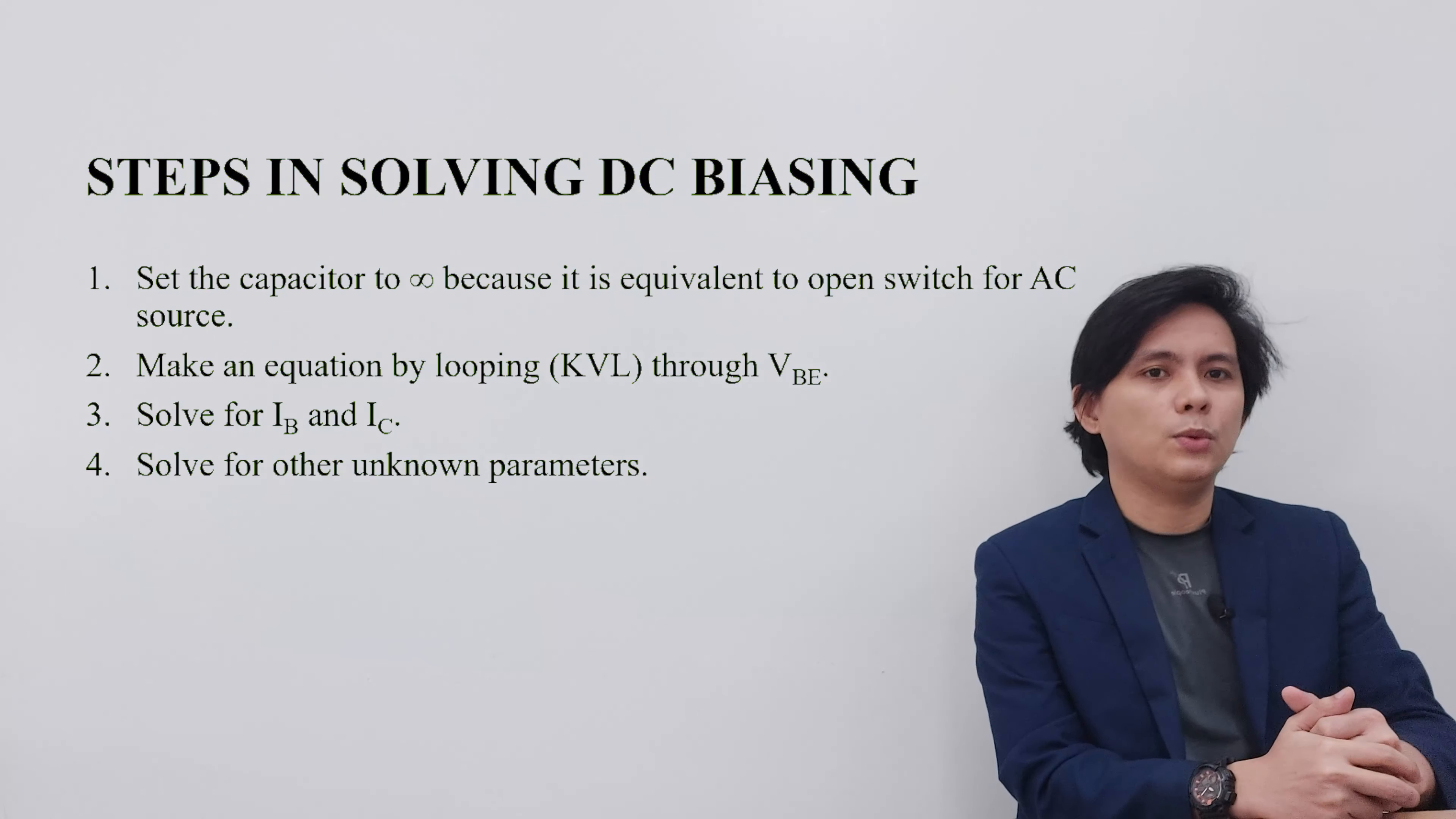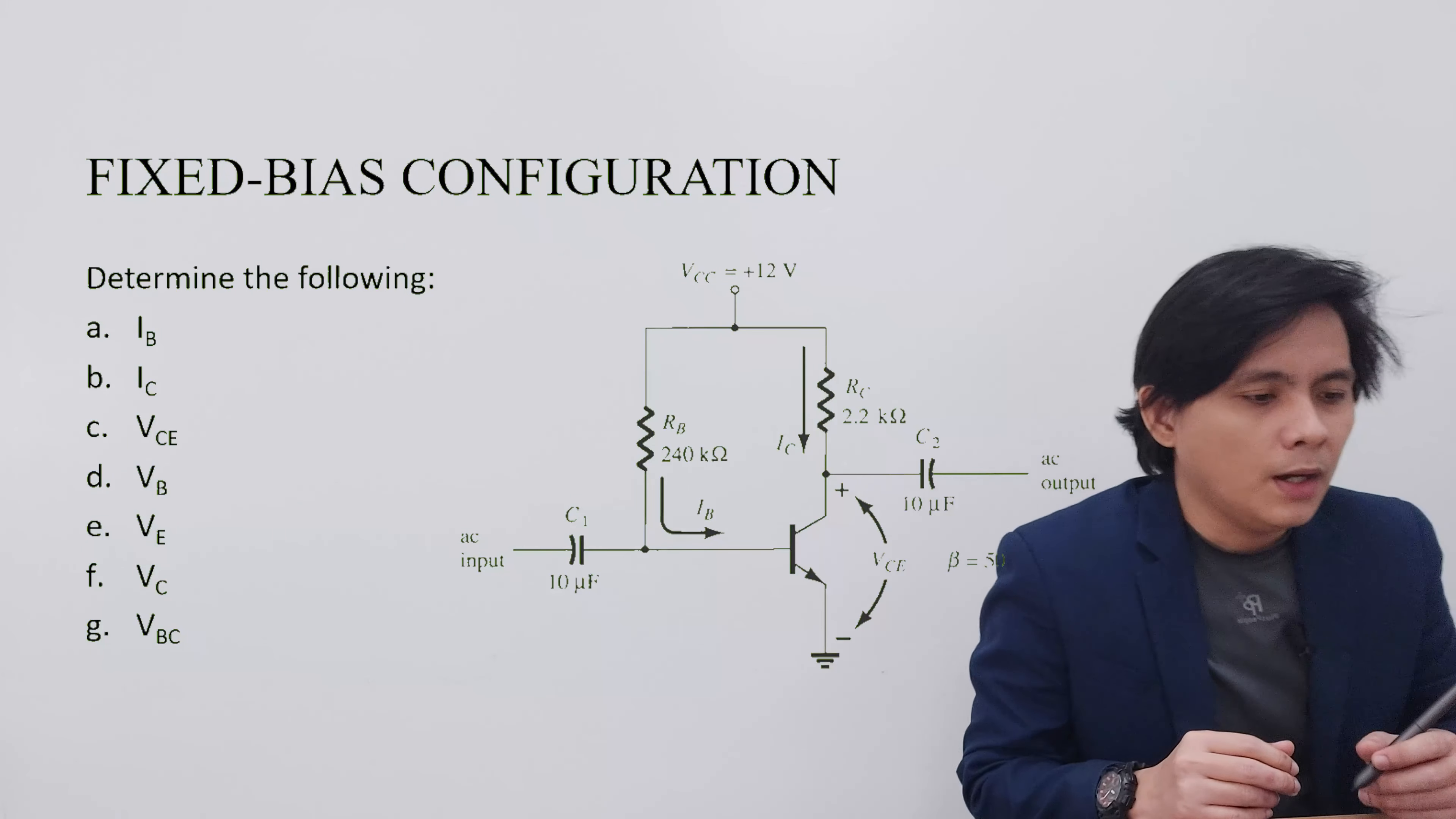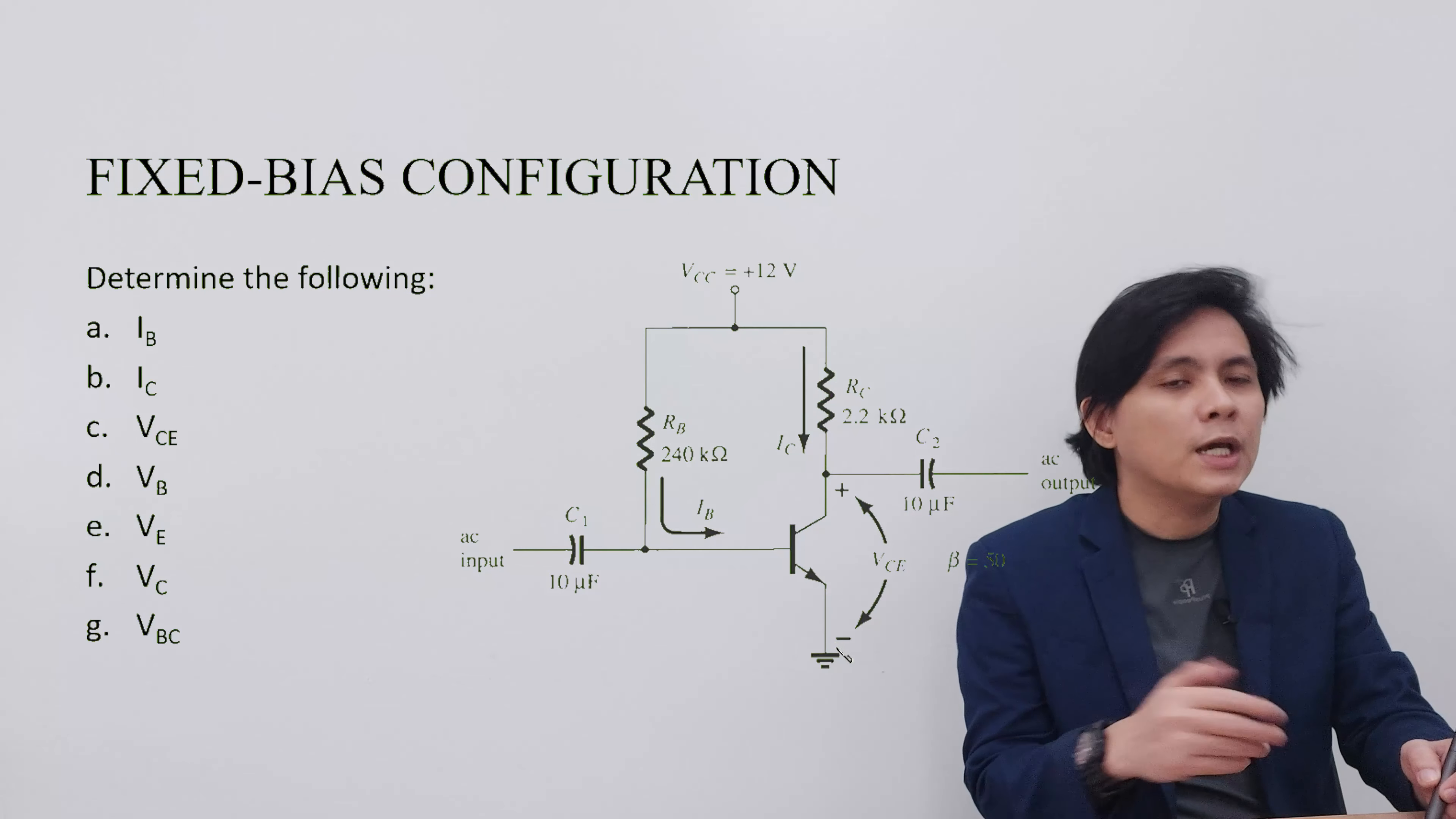So let's get into the example of a fixed bias configuration. As you can see, the input is on the base, and the base is connected to an RB, which is connected to a VCC or voltage DC source.